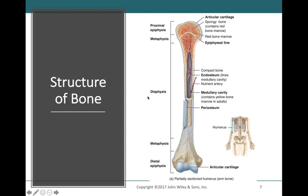The periosteum is found on the diaphysis, and when it reaches the epiphysis it is in the same plane as the articular cartilage. For the test: articular cartilage is found around the epiphysis, and the periosteum is found around the outside of the diaphysis. The structure of the long bone is a very important part of the skeletal system, so make sure you are comfortable with all the structures on this slide.